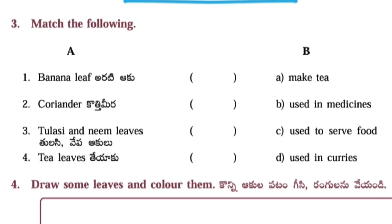Next one: Match the following. Panion leaf C - Use it to serve food. Coriander D - Use it in curries. Tulsi and neem leaves B - Use it in medicines. And tea leaves A - Make tea.